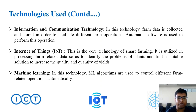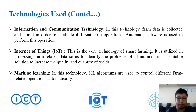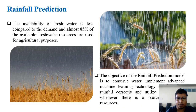There are three main technologies used in our project. First, Information and Communication Technology (ICT), where farm data is collected and stored to facilitate different farm operations using automatic software. Second, Internet of Things (IoT), the core technology of smart farming, used to process farm-related data to identify plant problems and find suitable solutions. Third, Machine Learning, where algorithms are used to control farm-related operations automatically.